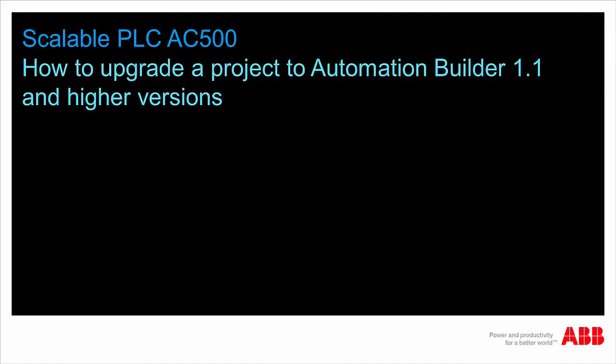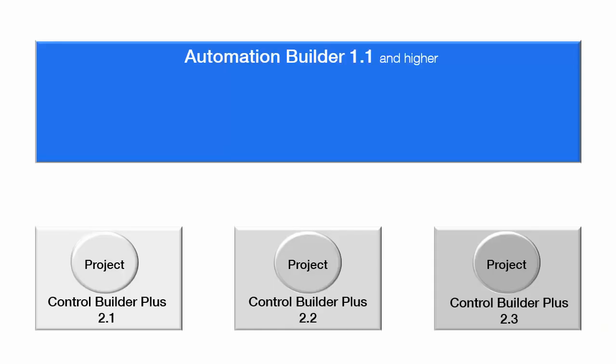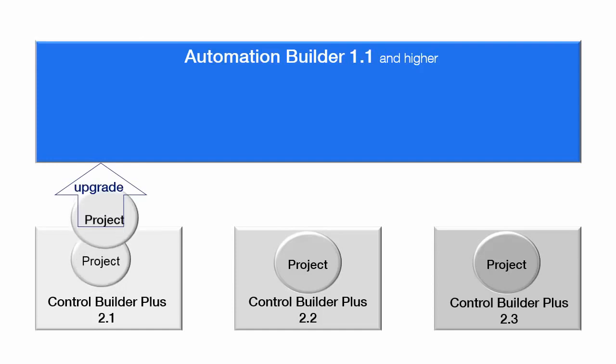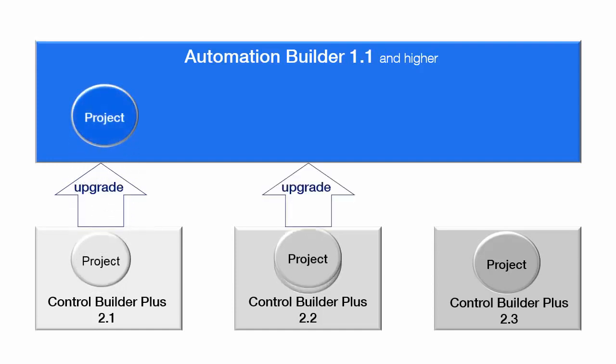Hello and welcome to this video tutorial on how to upgrade an existing Control Builder Plus project to Automation Builder 1.1. One could easily upgrade the project created in the previous editions of Control Builder Plus, like version 2.1, 2.2, and 2.3.